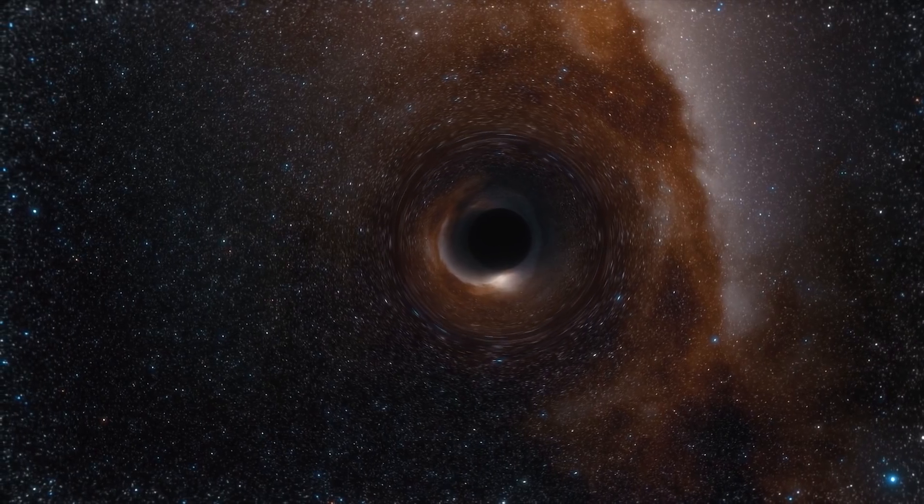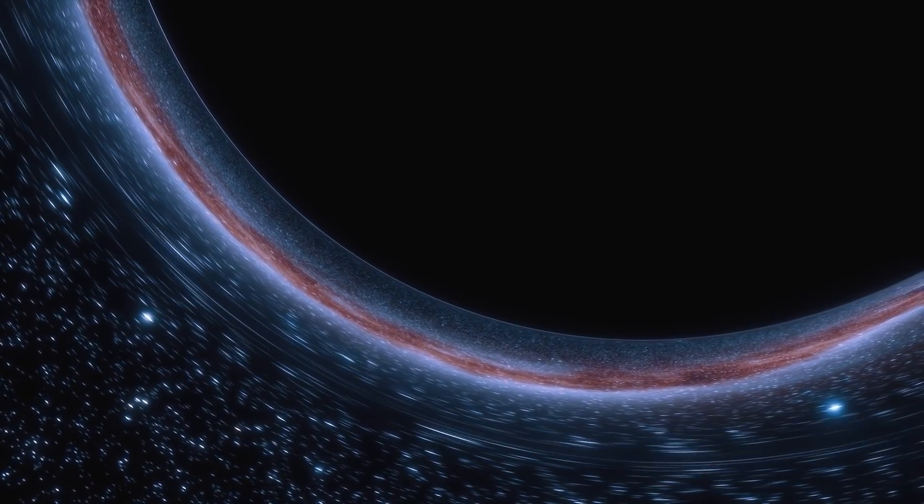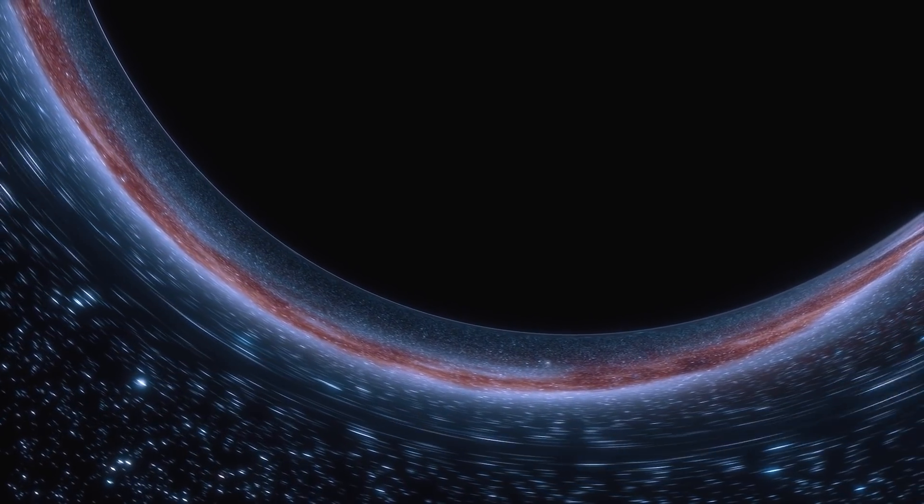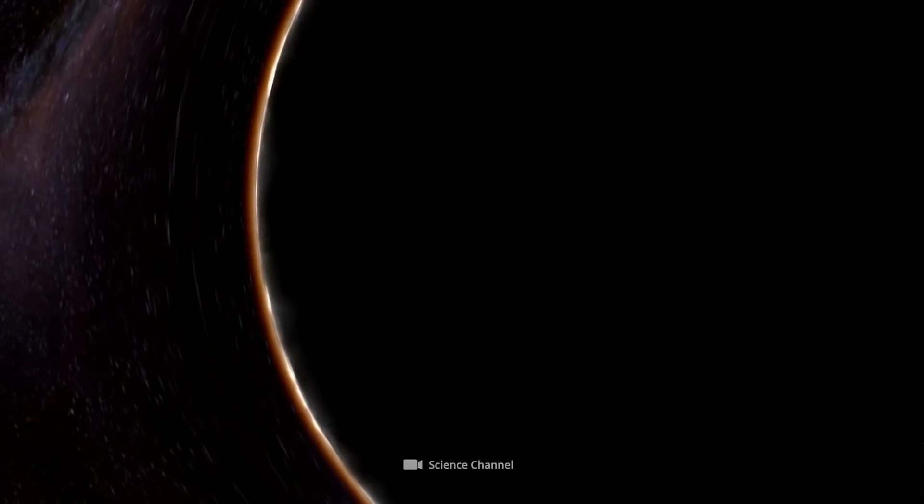As a result of this extreme compactness, such a strong gravity is generated in the immediate vicinity of black holes that it's not even possible for light to pass through the corresponding area or to leave it again.